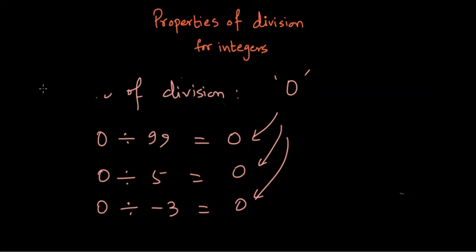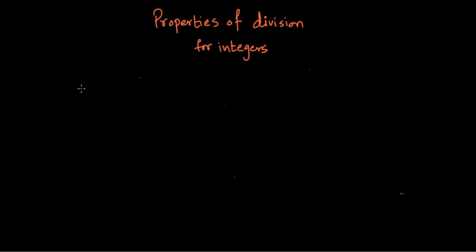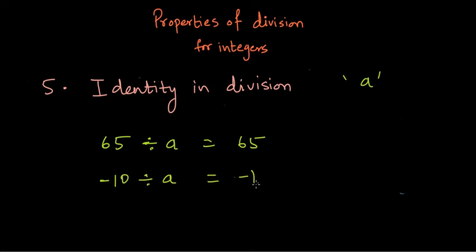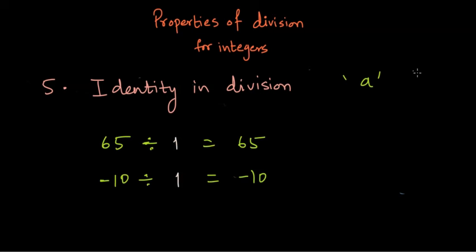There is another special number called the identity for division under integers. The identity is a number A such that when you divide any given number by A, you get the same number back. For example, 65 divided by A gives 65, and minus 10 divided by A gives minus 10. That number is 1 — if you divide any number by 1, you get the same number. Therefore, the identity in division is 1.